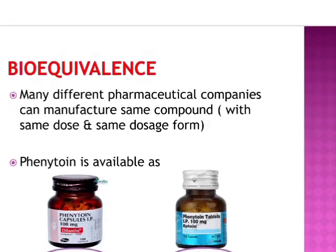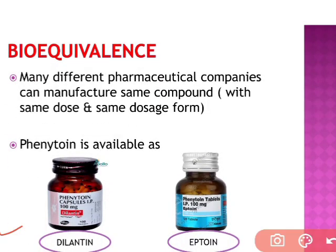What is bioequivalence in more detail? Many different pharmaceutical companies can manufacture the same compound with the same dose and same dosage form. For example, companies like Cipla, Ranbaxy, and Mankind can produce their own products — their own compounds or molecules — with the same dose and dosage form.